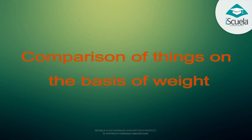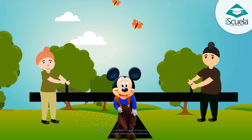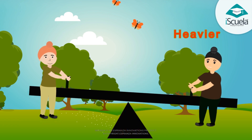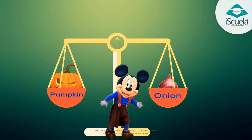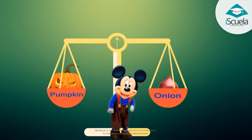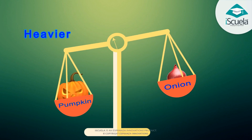Well done, dear children. Now let's compare things on the basis of their weight. Which is heavier? Which is lighter? Look and tell. Pumpkin is heavier. Onion is lighter.